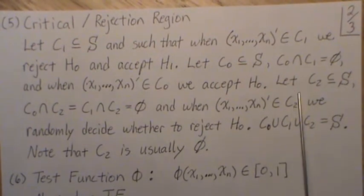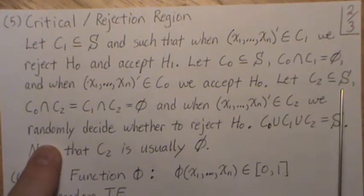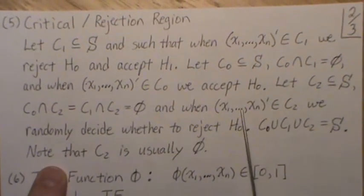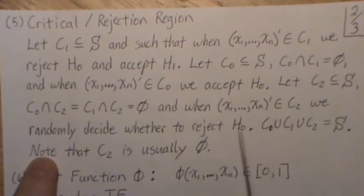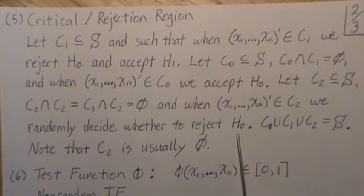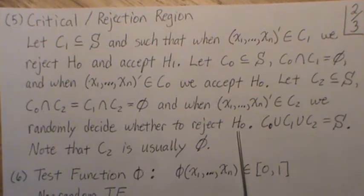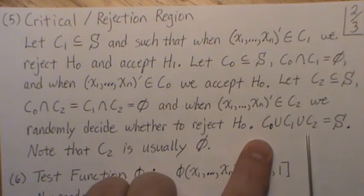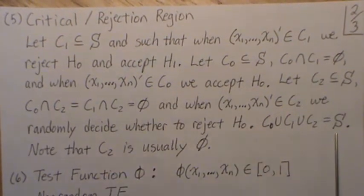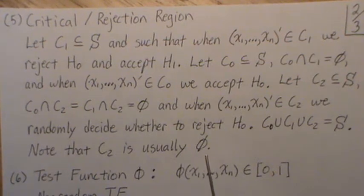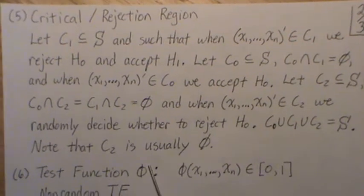We're also going to create another set called C2, which is part of the sample space disjoint from C0 and C1, and when the sample is an element of C2 we randomly decide whether to reject H0. That sounds weird, but it's called a randomized statistical test. These three sets need to make up the entire sample space, and pretty much everything we do C2 is going to be the empty set.